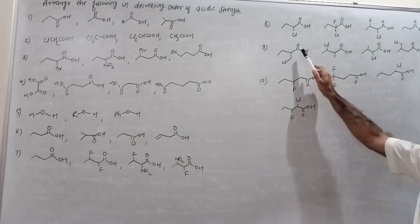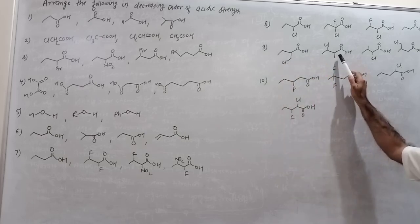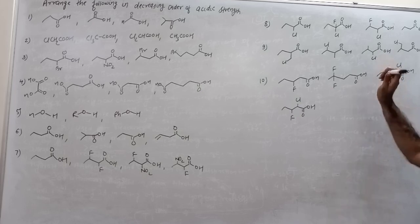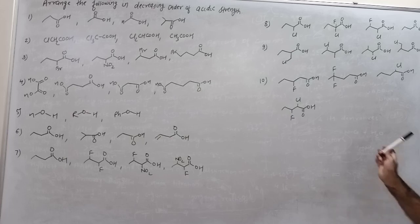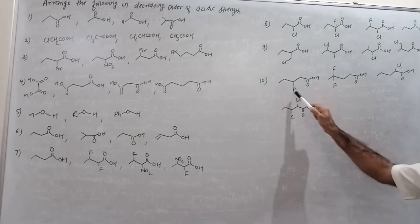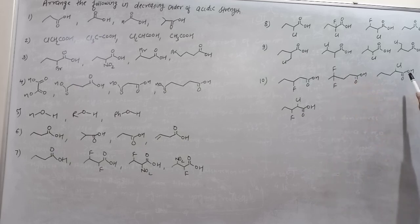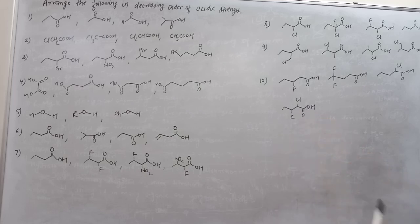After that in question 9, it is butanoic acid — carbon 1, 2, 3, 4 — with CH2Cl at carbon number 2. Then butanoic acid with fluorine at carbon 2 and fluorine at carbon 3. Then butanoic acid with fluorine at carbon 2 and fluorine at carbon 3 again. Then butanoic acid with fluorine at carbon 3, and then carbon number 4 with 2 fluorines. Then normal butanoic acid.